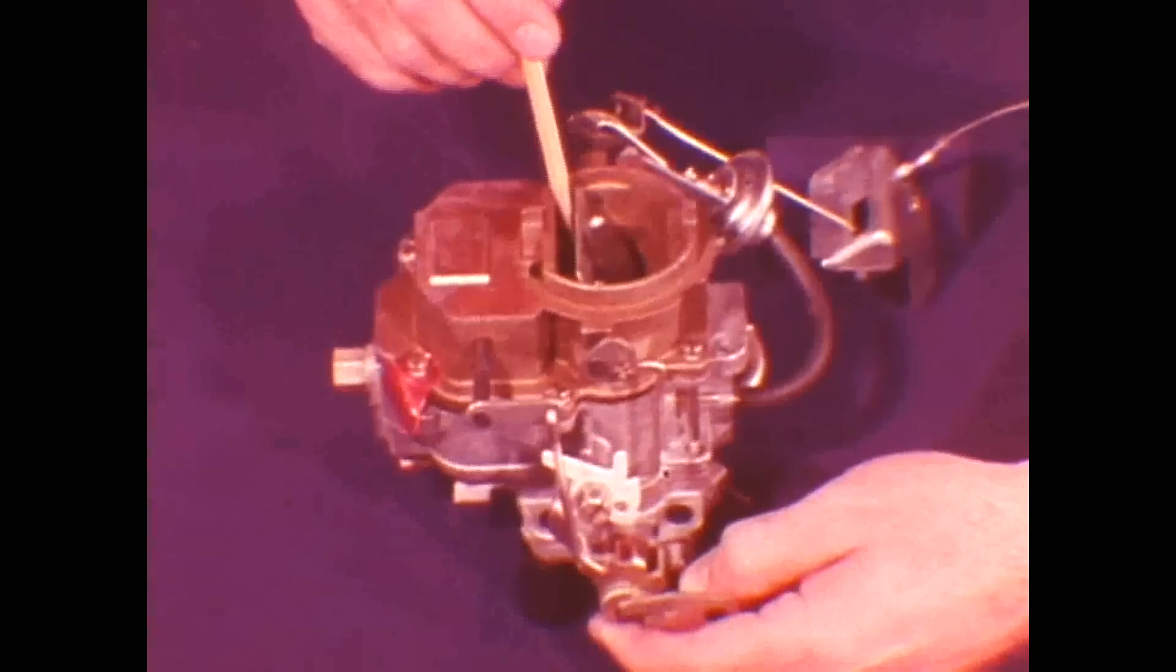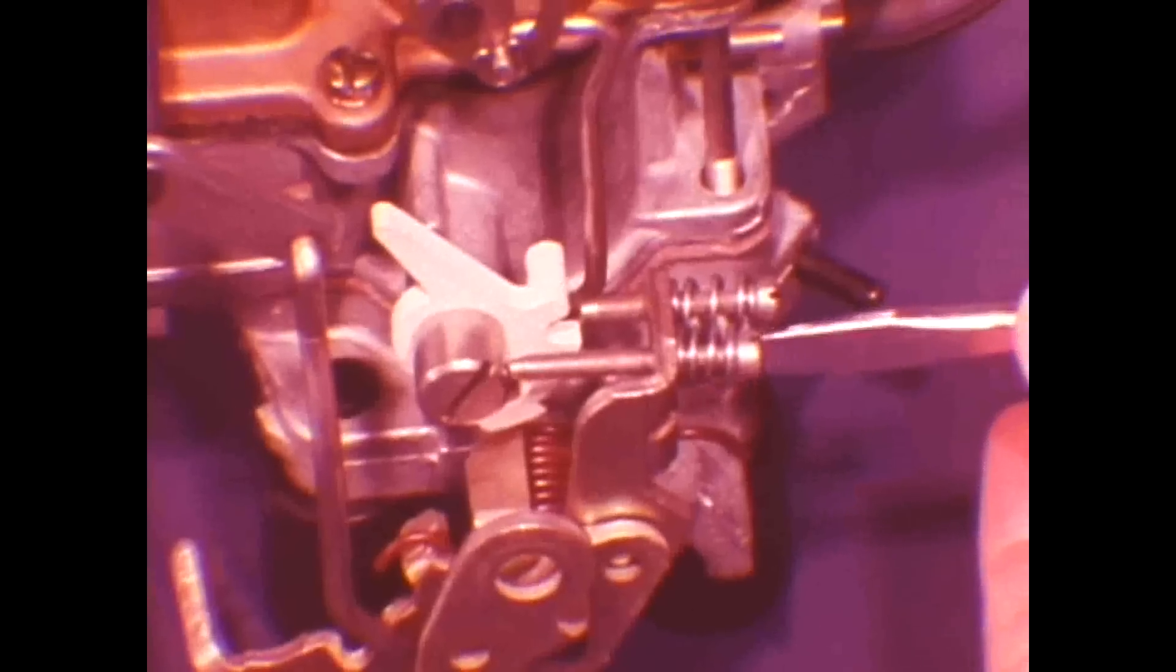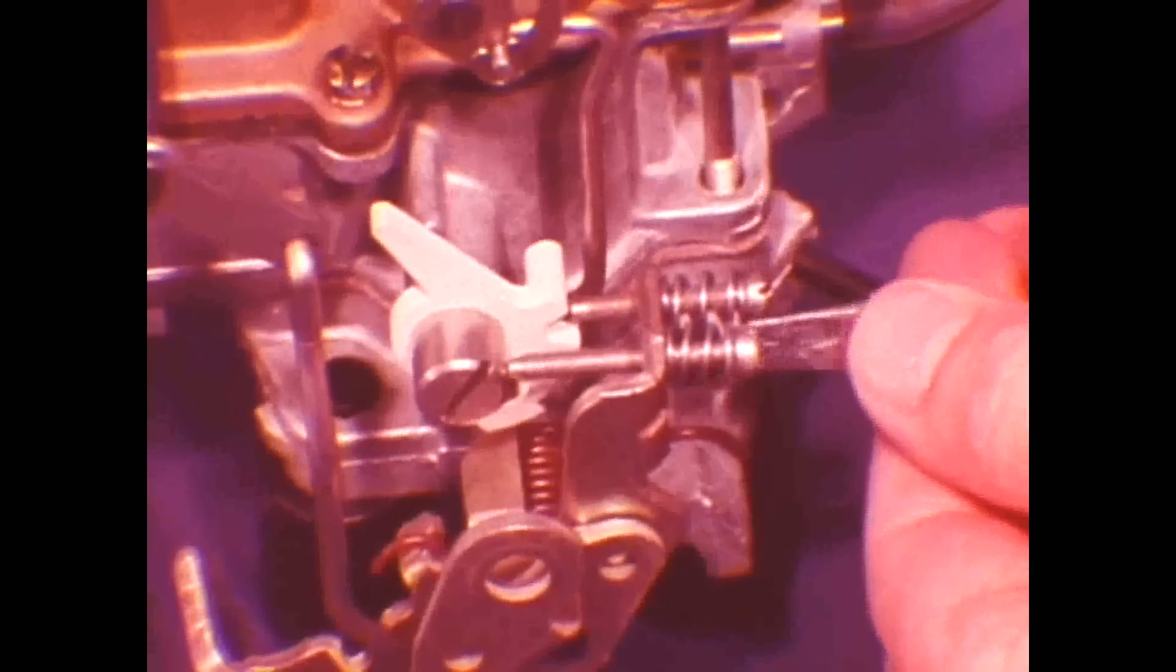Here's how to check the vacuum step up piston setting. First, back off the idle speed screw until it clears the stop. While maintaining downward pressure on the step up piston assembly, loosen the lifter sleeve lock screw. Push the outer tab downward as far as it'll travel, then tighten the lock screw. That's all there is to it.